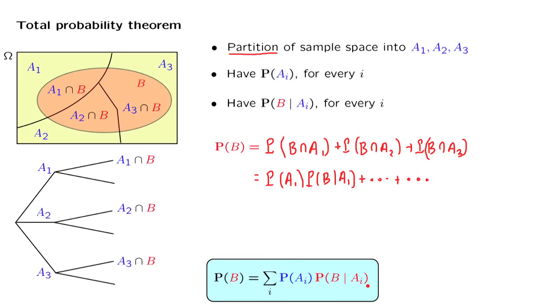That is, B occurring under the different scenarios. And those particular probabilities are the product of the probability of the scenario times the conditional probability of B, given that scenario.